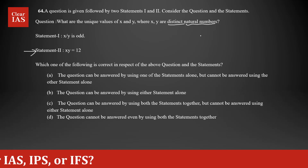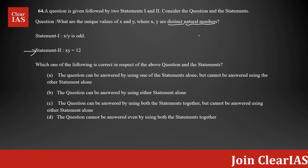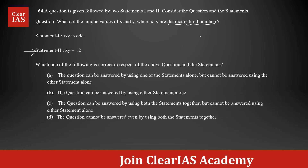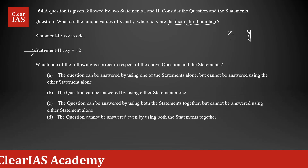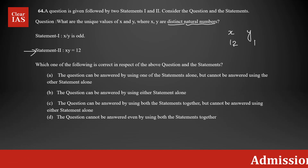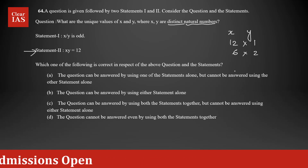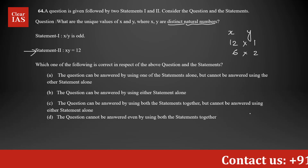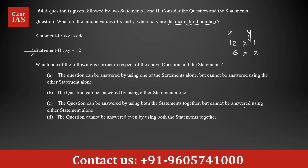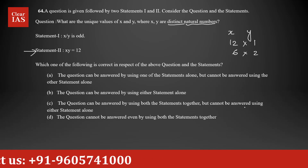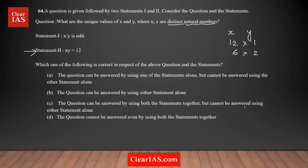Statement two says the product of x and y is 12. I'm going to think about different possible combinations for two numbers whose product is 12. For example, x=12 and y=1, or it could be 6 and 2, or 3 and 4 — there are multiple combinations possible. So statement two is not sufficient to get a unique value for x and y, since we get multiple values.